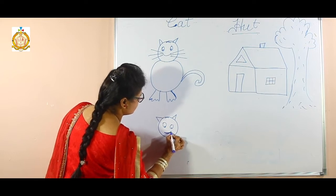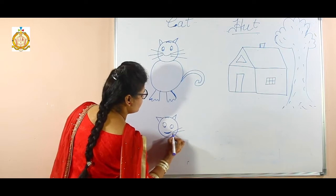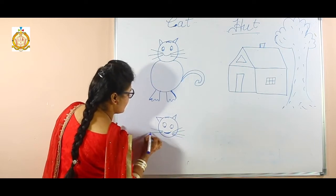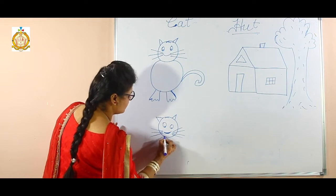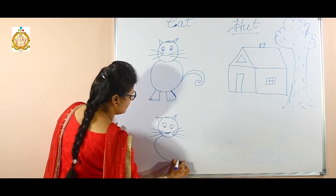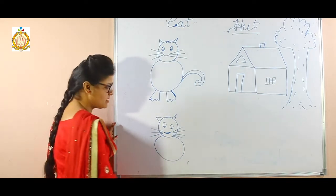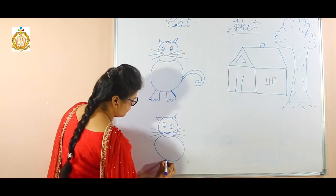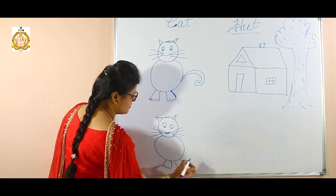Then lips like this — mouth. What is this? Mouth. Then beard, like this. Cat is having ears like this. Then draw a big circle like this. What you have to draw? Big circle like this. Then draw feet. What you have to draw? Feet, like this.